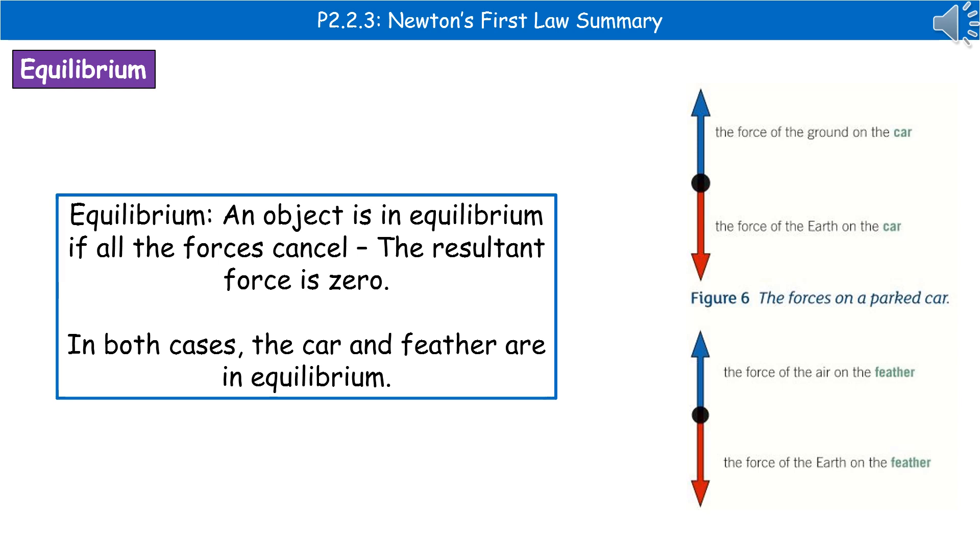Same thing with the feather. We've got the force of the air on the feather and the force of the earth on the feather. Again, because those are balanced, they're in equilibrium. So our feather is going to fall at a constant speed.